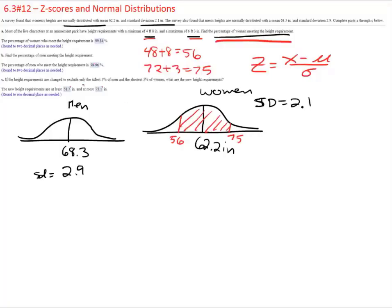Let's skip down to this question because it's a little different. It says if the height requirements are changed to exclude only the tallest 5% of men and the shortest 5% of women, what are the new height requirements? So now we have, let's do the men. So there's my curve, I still have an average of 68.3 and a standard deviation of 2.9.